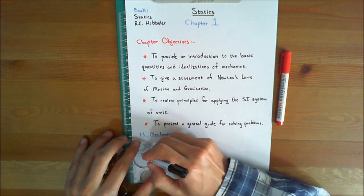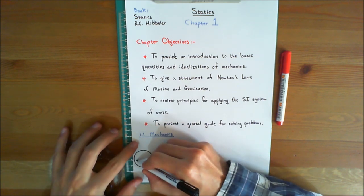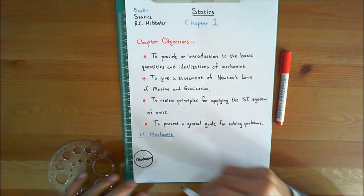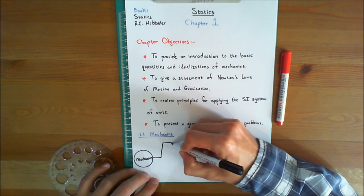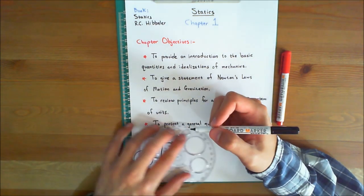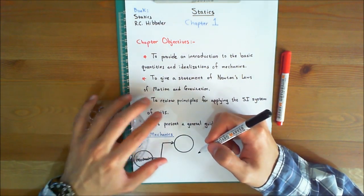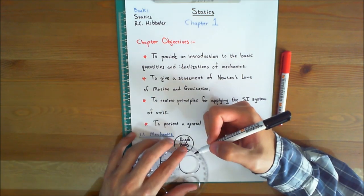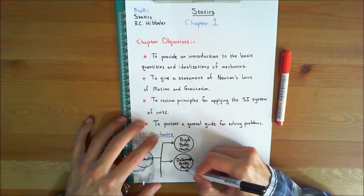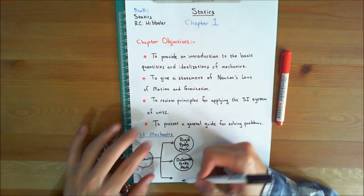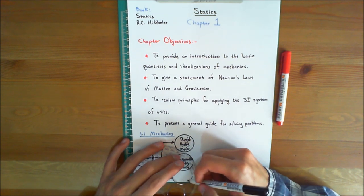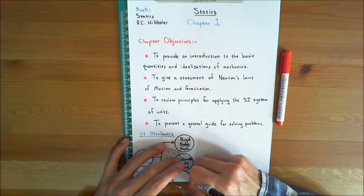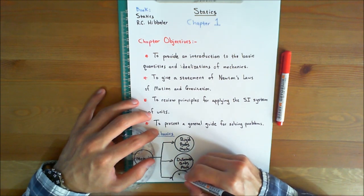So mechanics is divided into three branches. The first of which is called rigid body mechanics. The second is called deformable body mechanics. And finally, the last one is called fluid mechanics.